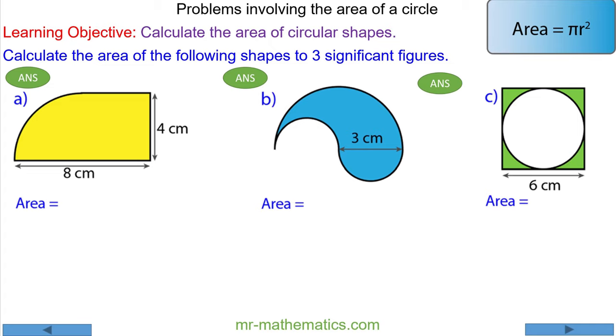In this lesson we're going to solve problems involving the area of circular shapes. We'll begin with question a. We have a composite shape made up of a square which is 4 by 4 and a quarter circle. The area of the square is the length times the width, which in this case is 4 times 4.